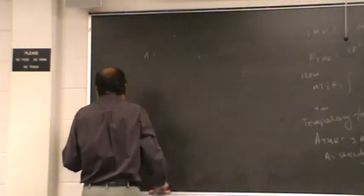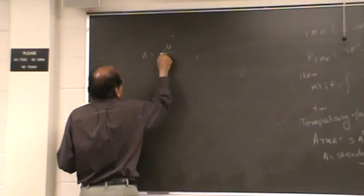Availability - we have seen this expression before - is equal to mu by lambda plus mu.